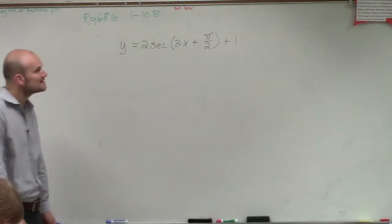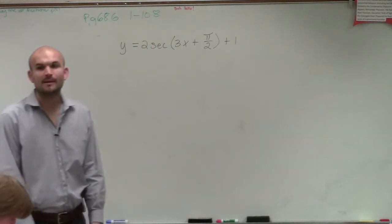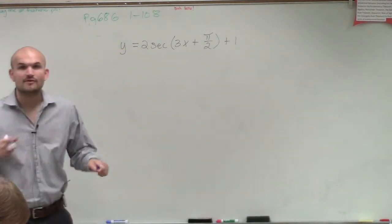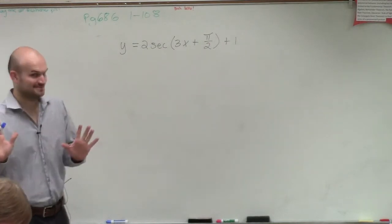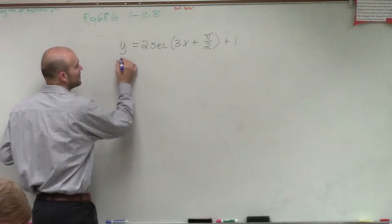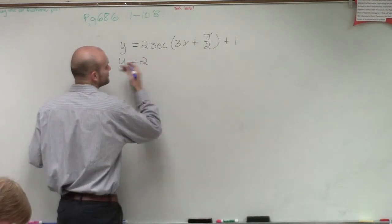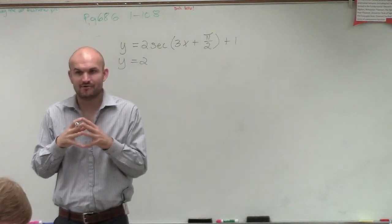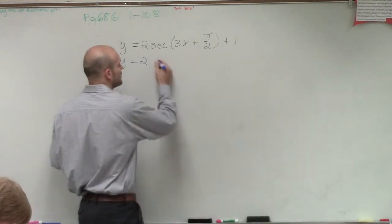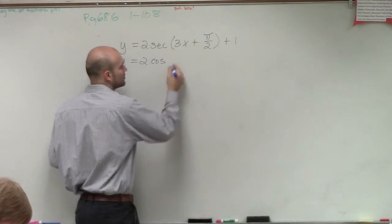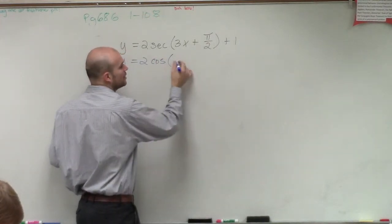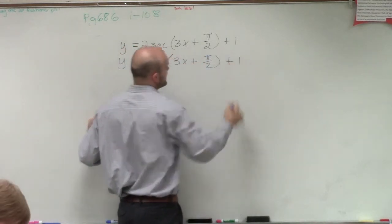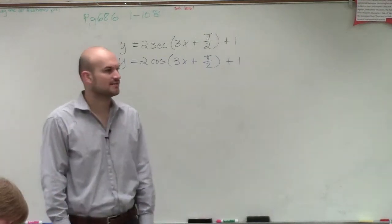We have y equals 2 secant of 3x plus pi divided by 2. There are a couple things to keep in mind when doing a problem like this. First, I need to remember that we can rewrite this as the reciprocal function. I'm going to use cosine just so I can get an idea of what the graph is going to look like, and then I'll determine the phase shift and related properties.